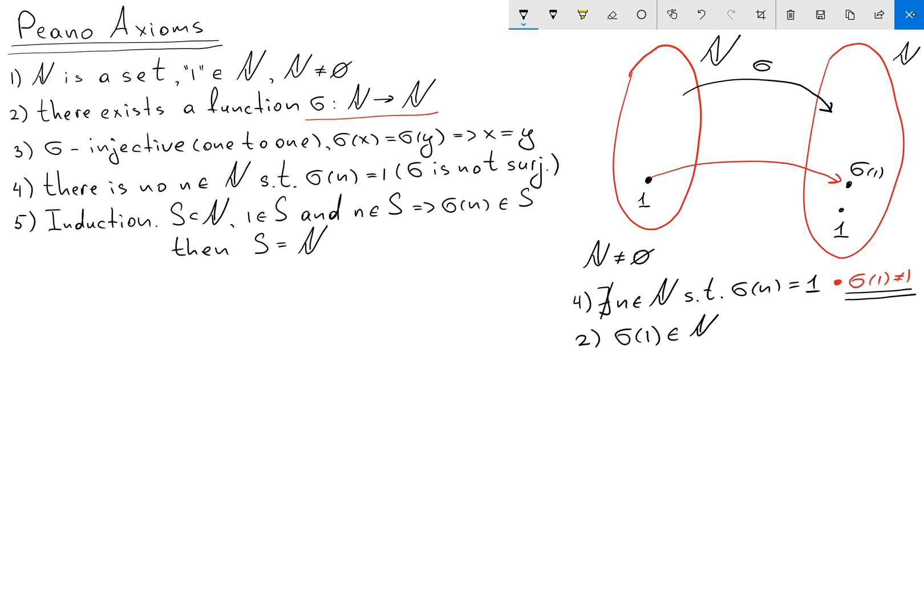So it means my sigma of 1 is going to map to another element sigma of 1 distinct from 1. If I have another element sigma of 1 on the right hand side, it means I also have this element on the left hand side. You can see before we started with just one element, but by doing just one procedure we end up with two elements in our natural set N.